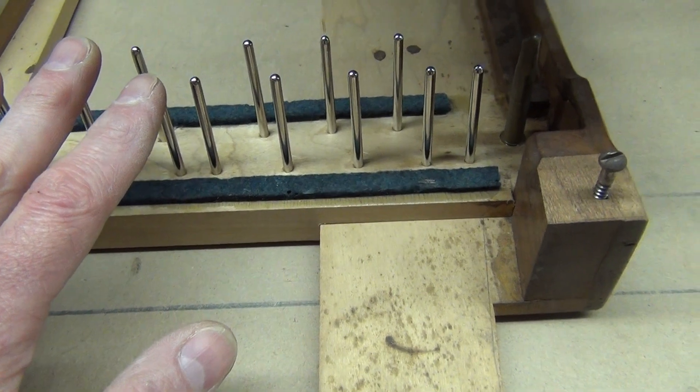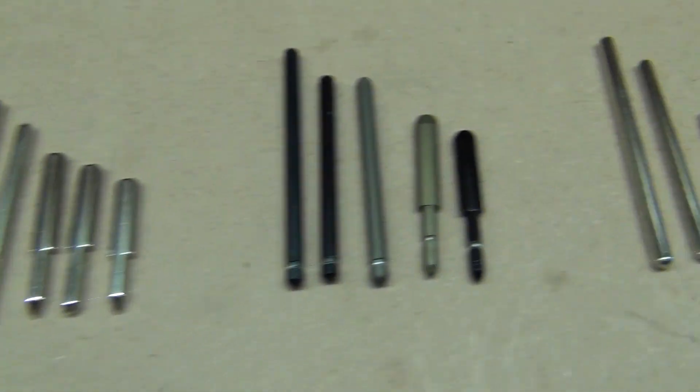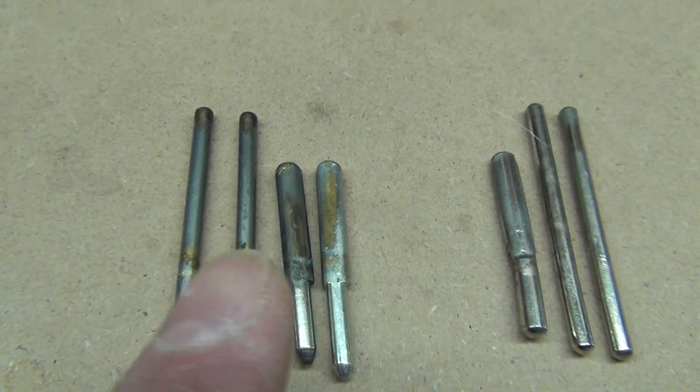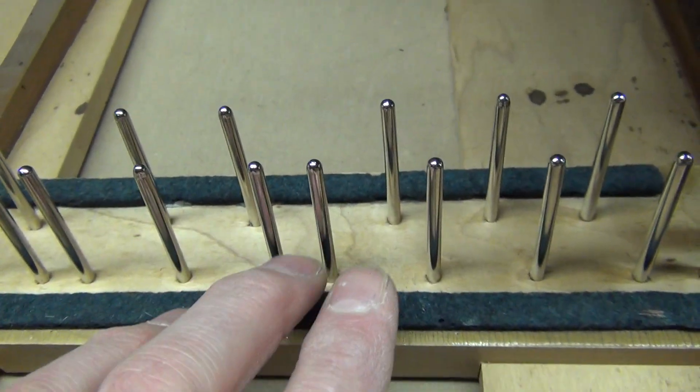Now the problem with replacing the original brass plated pins with the newer steel pins is that brass bends easily from side to side. So when you need to do some minor adjustments with the brass pins, they bend easily.